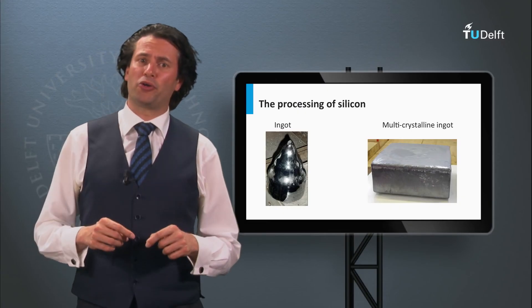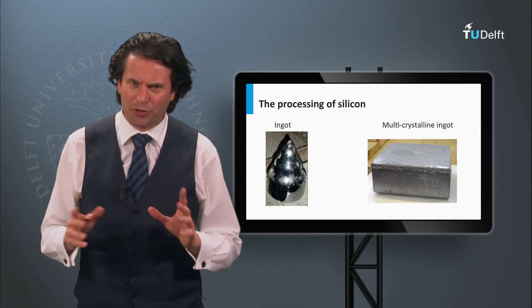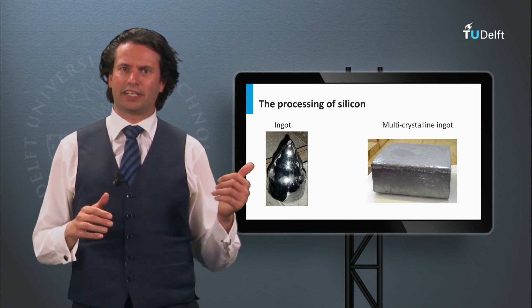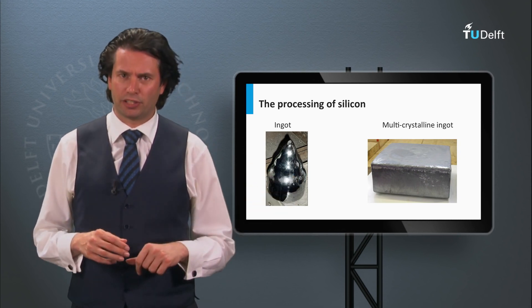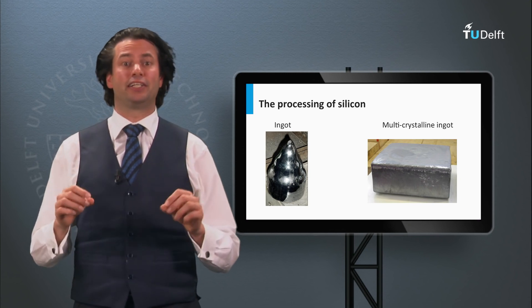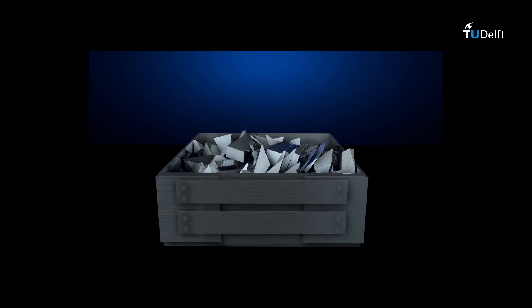Next to monocrystalline silicon ingots, multicrystalline silicon ingots can be processed as well. Multicrystalline and polycrystalline silicon consist of many small crystalline grains. This can be made by melting highly purified silicon in a dedicated crucible and pouring the molten silicon into a cubic shaped growth crucible.